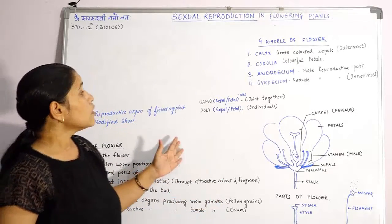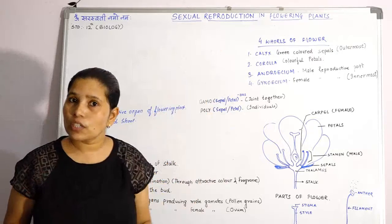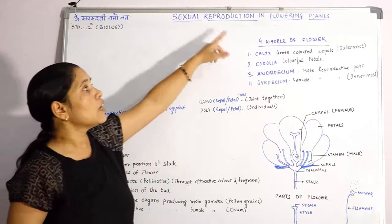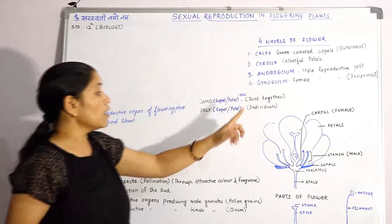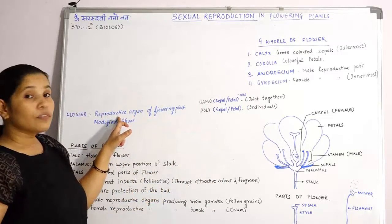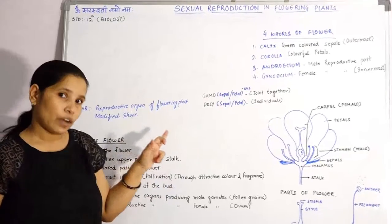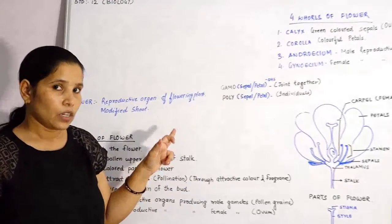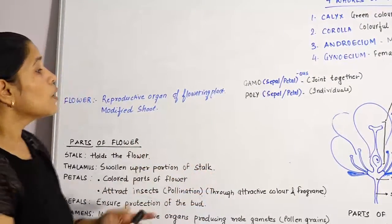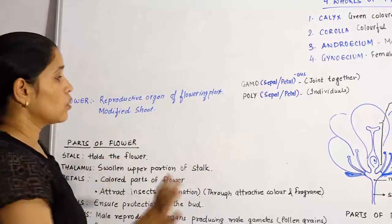So what is happening in flowering plants? Where is sexual reproduction occurring in plants? Sexual reproduction occurs in flowers. So what is a flower? Flower is a reproductive organ of a flowering plant. Why a reproductive organ? Because in your plant there are two parts.